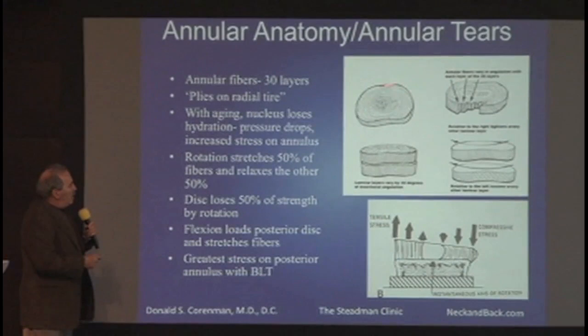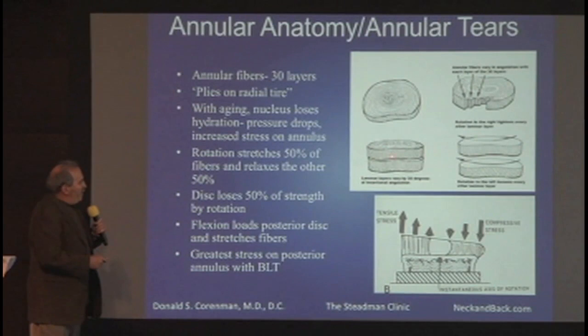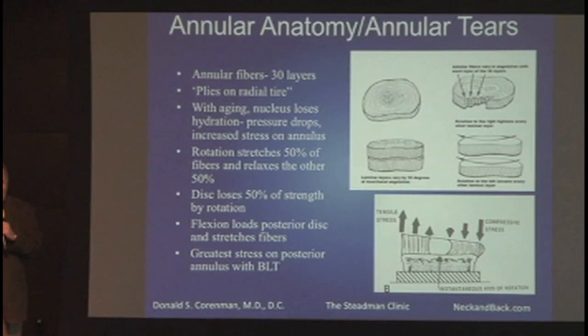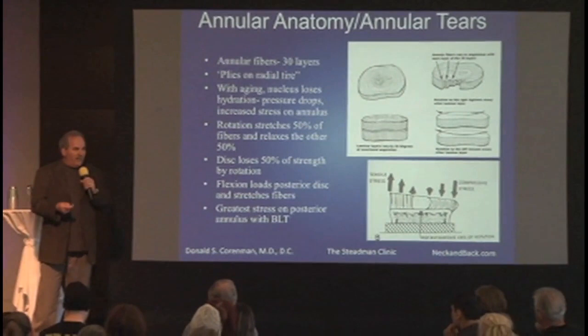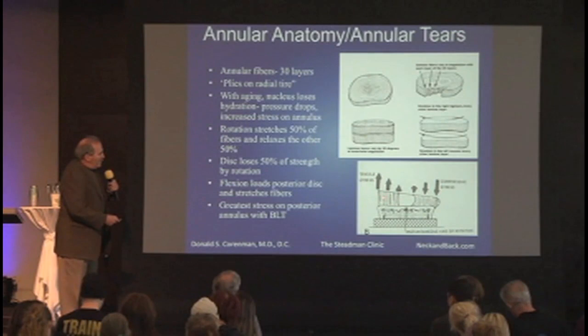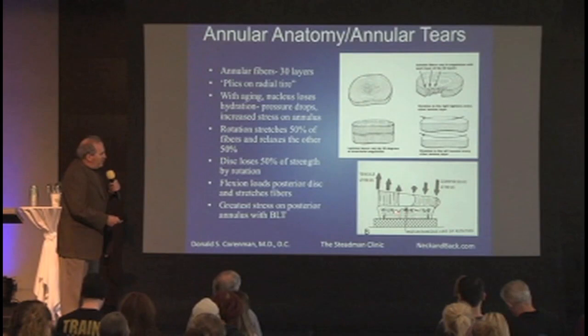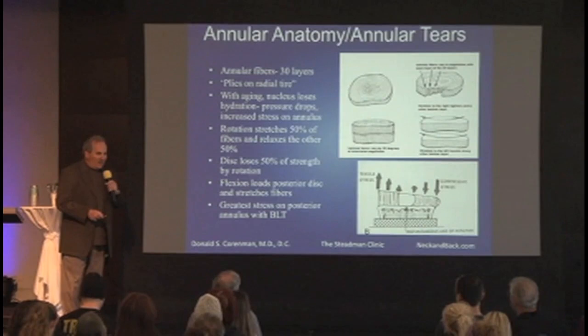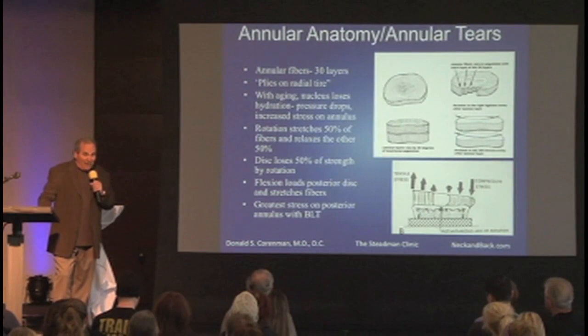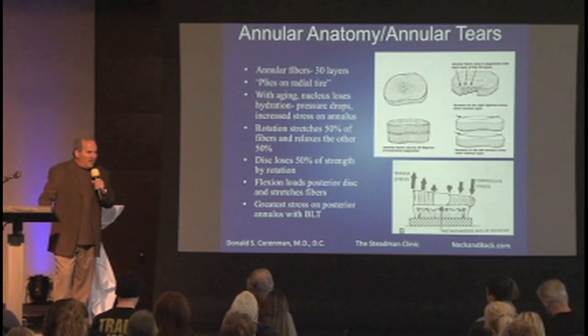The disc is a jelly-filled donut — the nucleus on the inside surrounded by 30 layers of lamina, the annular fibers. Each lamina goes in a different direction — 30 degrees on one layer, then 30 degrees in the opposite direction on the next. When you rotate, you lose 50% of the strength of your disc. When you bend forward, the tensile fibers in the back of the disc are under tensile stress — the perfect position for an annular tear. The evil position is BLT: Bend, Lift, Twist. Do not do all of them at once, and try not to do two at once.